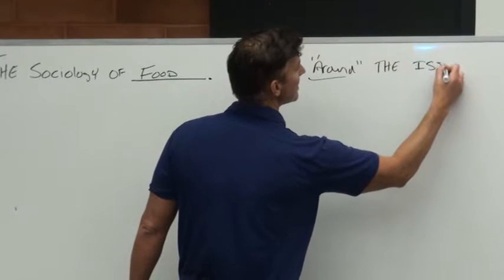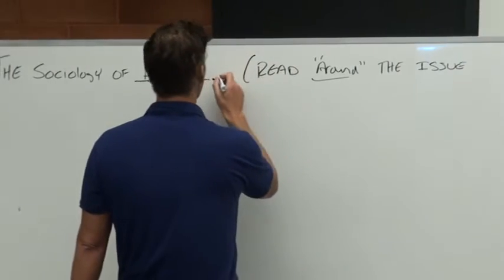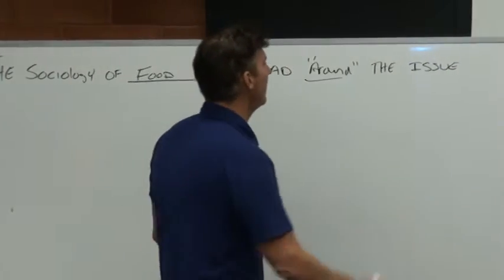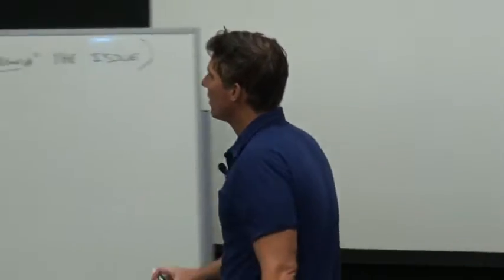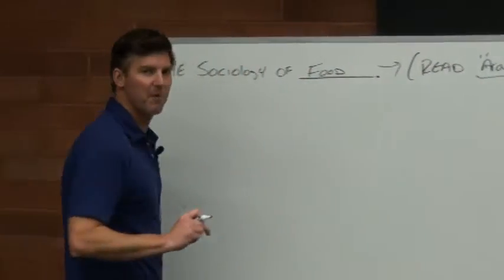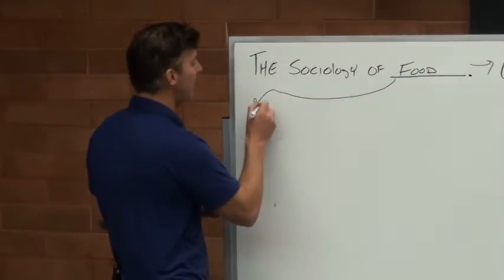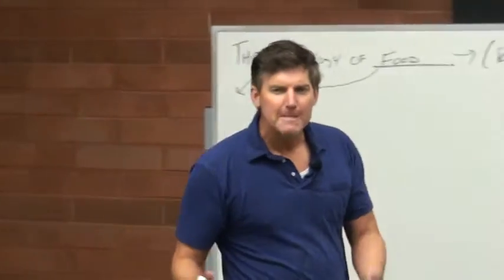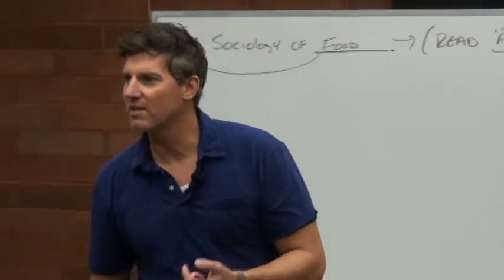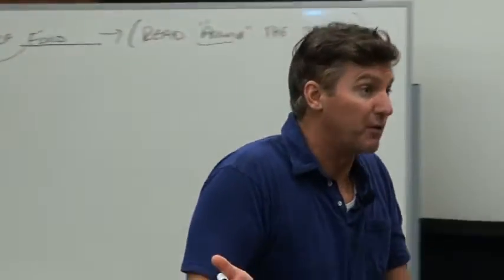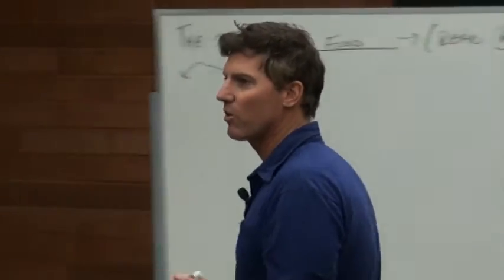Reading around the issue means you're going to have to go online, go to the library, go somewhere, and put in 'the sociology of food.' You would do what we call information gathering, which is different than research. Now, if you had to do a search on Google, you would first put in 'the sociology of food' because you might come up with some good results. What would be some other words you'd put in there — just off the top of your head?